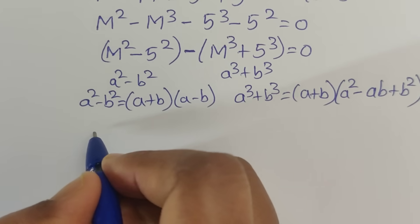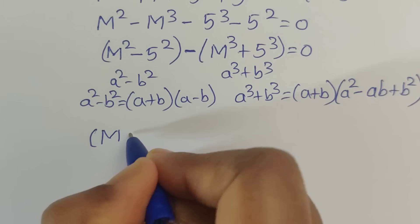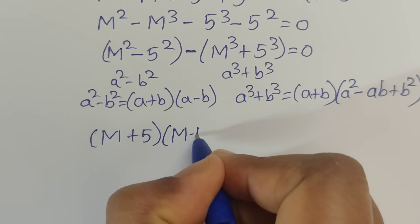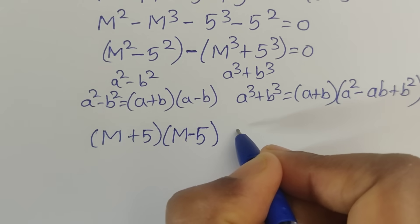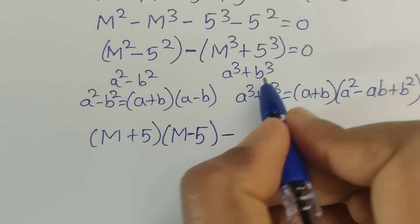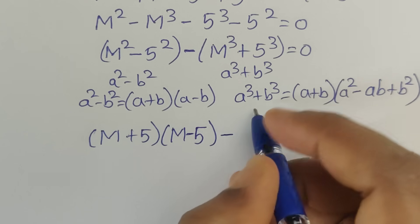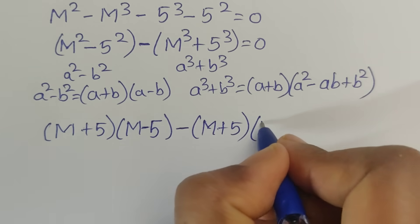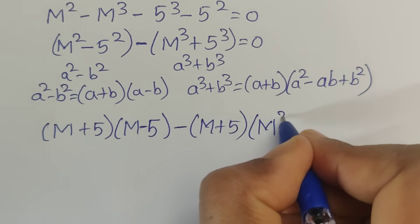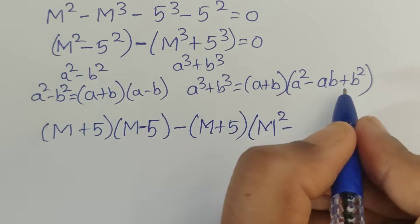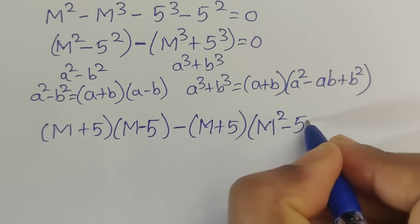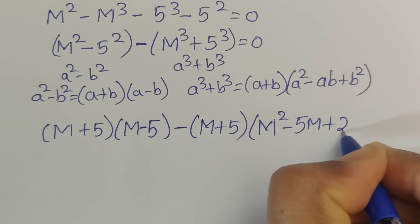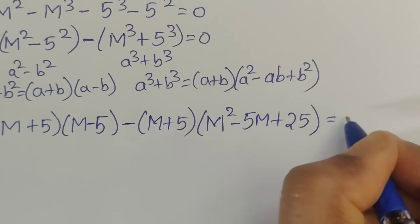We can write this using the formula. So we write m plus 5, then m squared minus m times 5, so m times 5, which gives 5m, plus b squared which is 5 squared, equal to 25, equals 0.